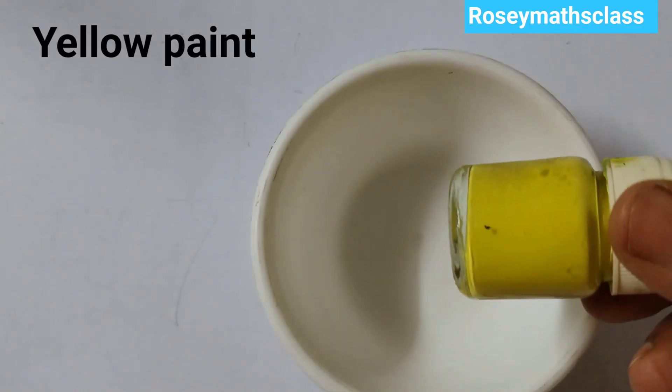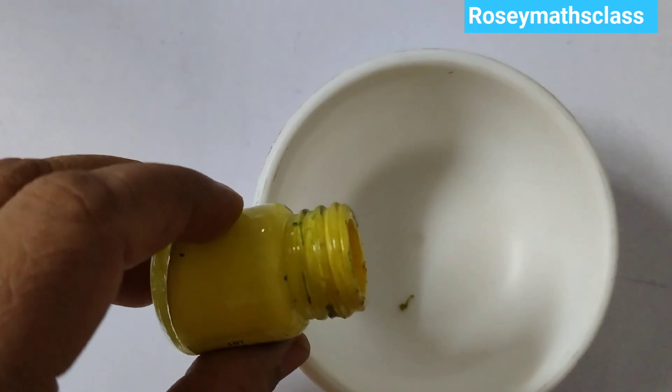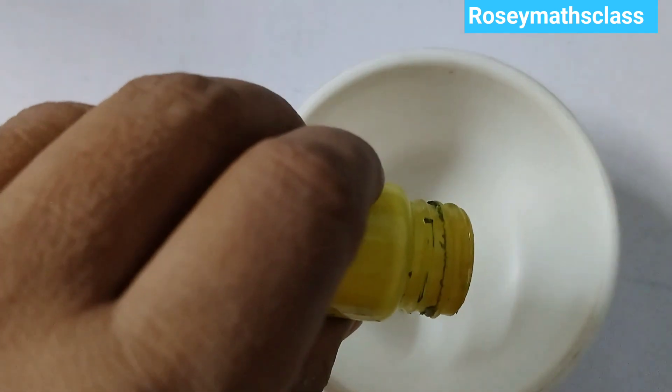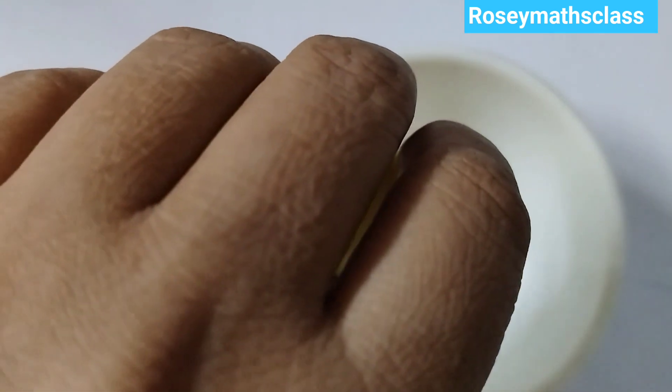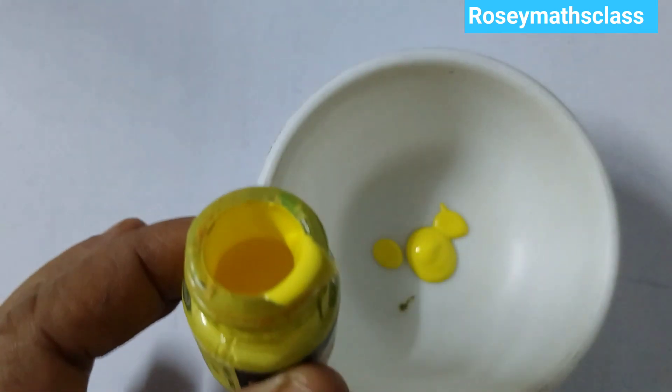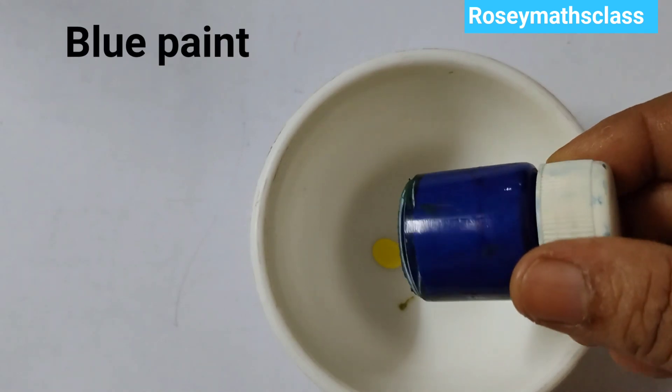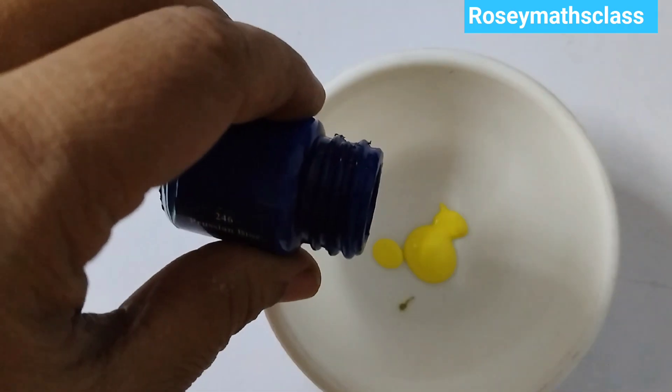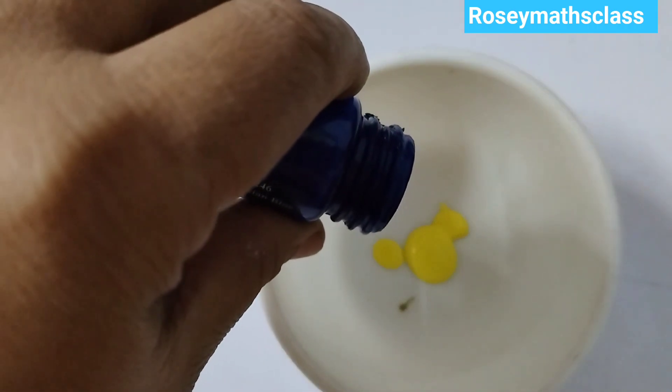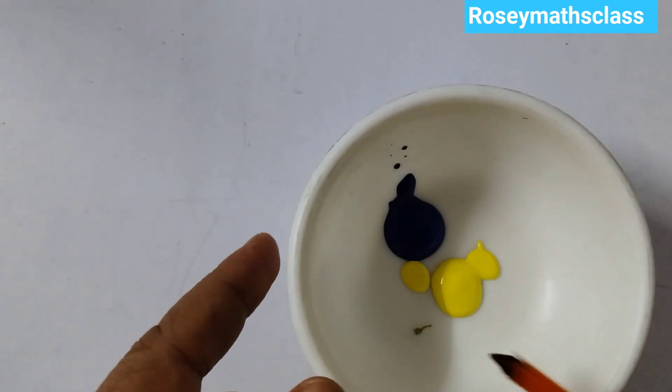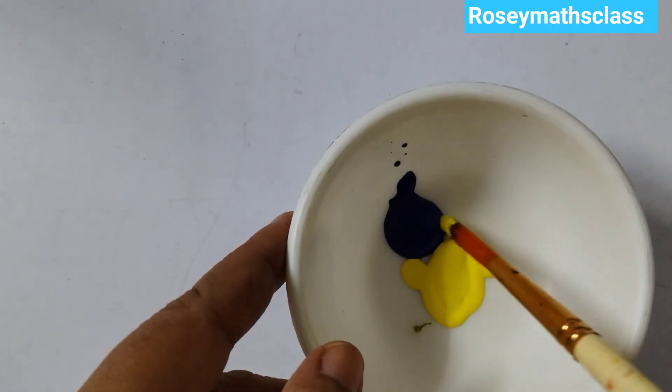Hello students, welcome back to Rosy Maths Class. Let us do an experiment. Here I have yellow color paint and blue color paint. I'm going to mix them well. Let us see what color we get.